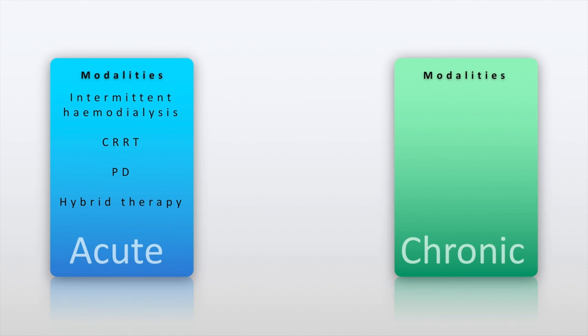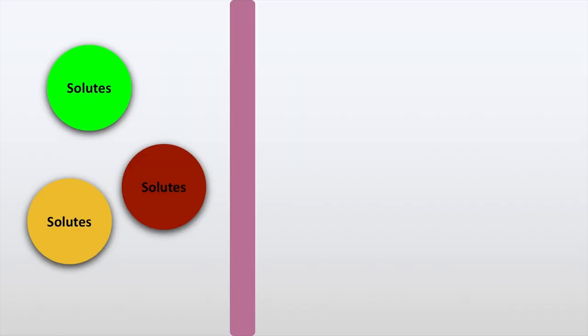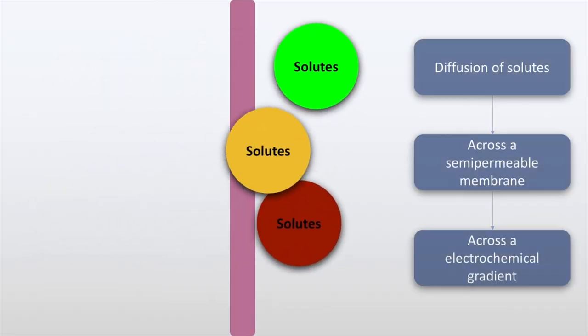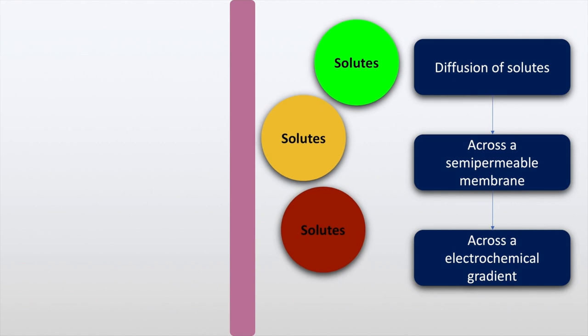For chronic dialysis, such as in patients with chronic kidney disease, we have intermittent hemodialysis and peritoneal dialysis. Hemodialysis is the diffusion of solutes across a semi-permeable membrane and across an electrochemical gradient.